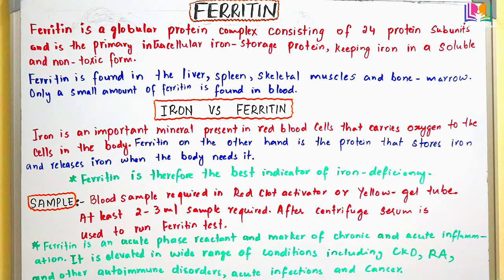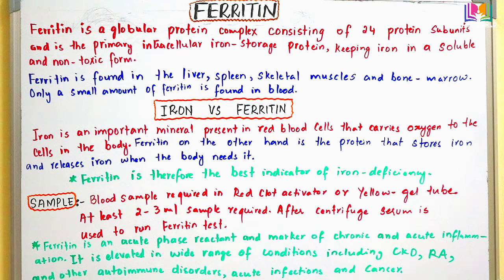Regarding sample collection: to check the ferritin level, we need serum. If anyone needs a ferritin test, they can go to the lab at any time — no fasting is required. The phlebotomist will collect the blood sample in a clot activator tube, either a red cap or yellow cap, and at least 2 to 3 ml of blood sample is required. After centrifugation, the serum is used to run the ferritin test.